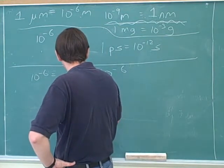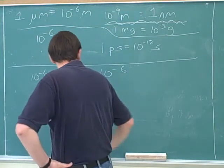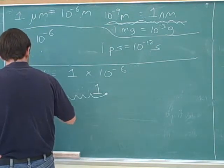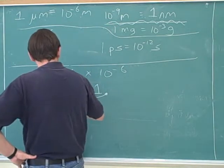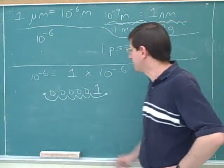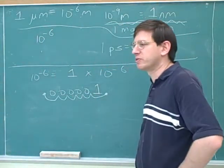One, two, three, four, five, six, which gives me five zeros. So I have a decimal point and then five zeros and then the number one.